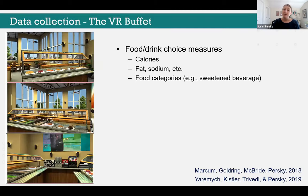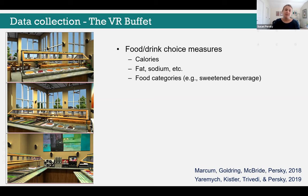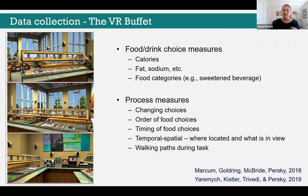A concrete example is the VR buffet, a tool for measuring food choice behavior. It captures gross-level measures like calories on the plate and food categories chosen, but also process measures: order, timing, and how participants navigate around the room. All of that helps understand the holistic food choice process.